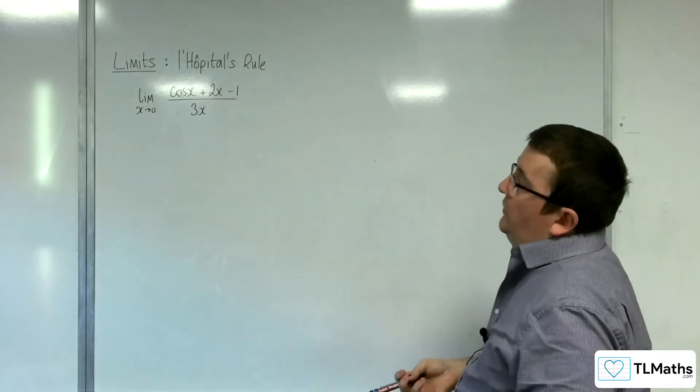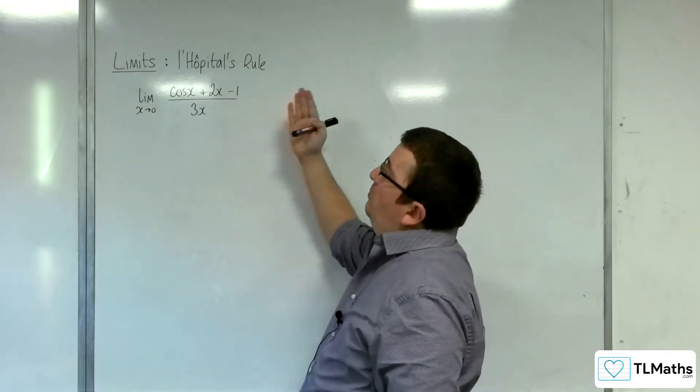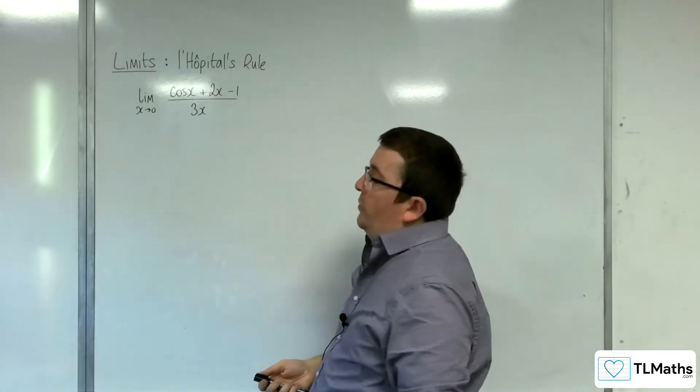So in this example we want to find the limit as x tends to 0 of cosine x plus 2x take away 1 over 3x.